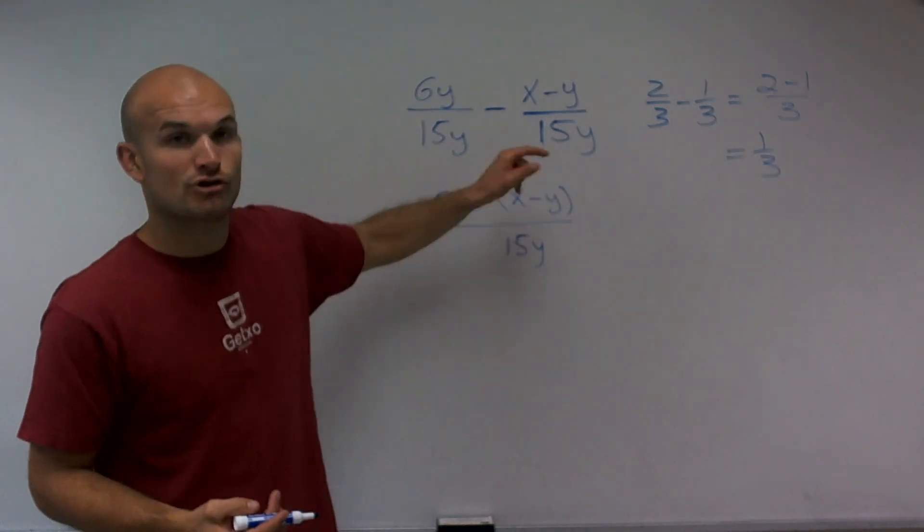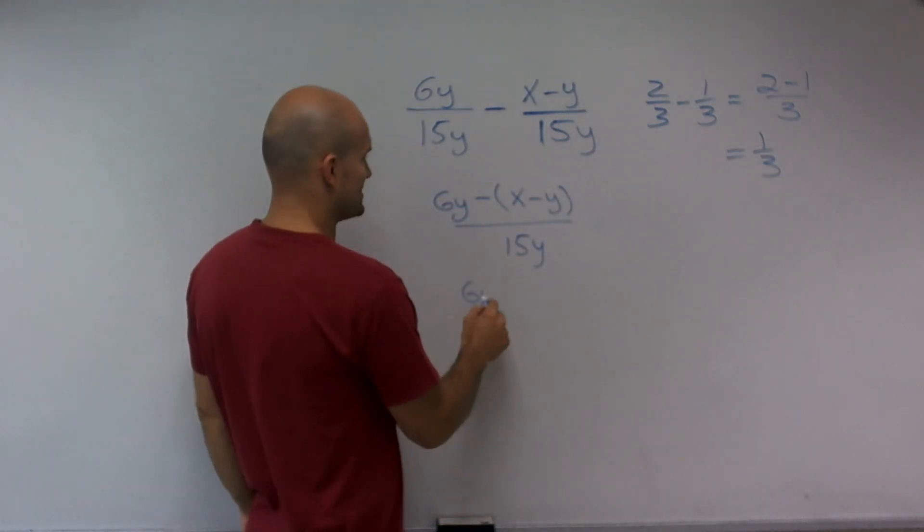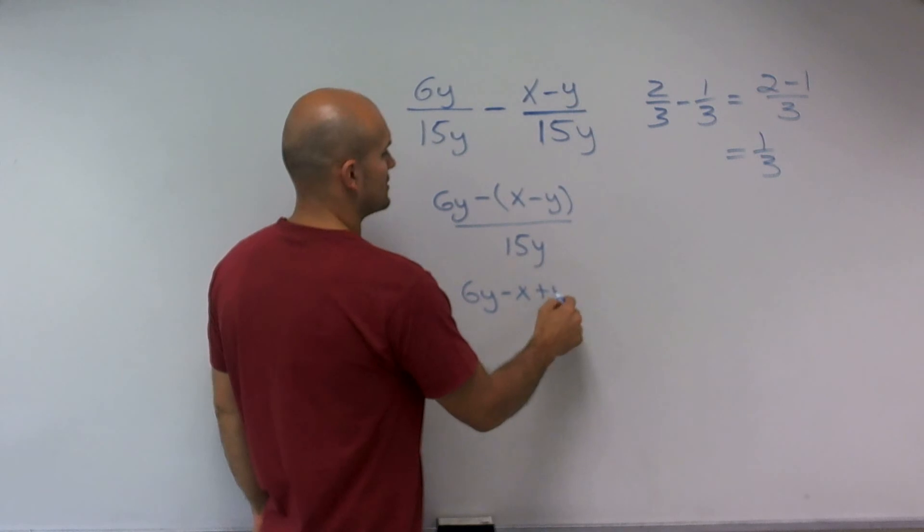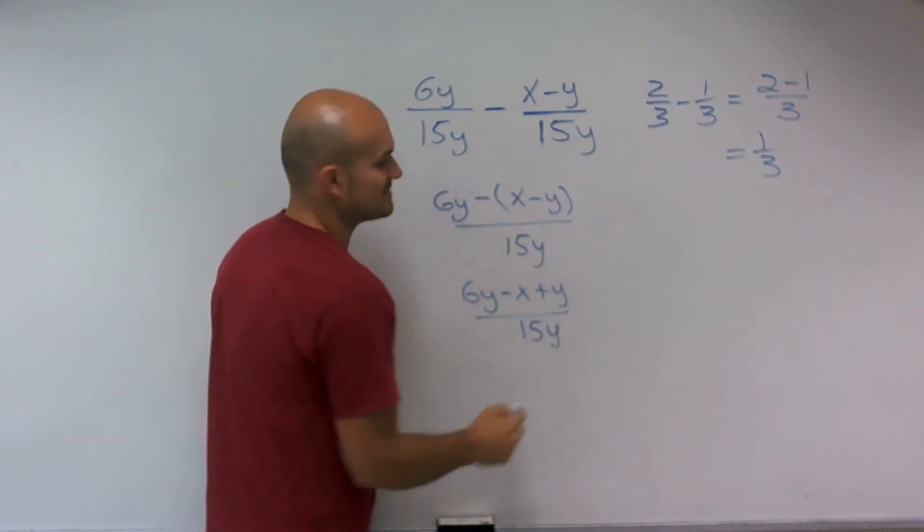So now what I'm going to do is I'm going to distribute this negative sign. So I have 6y minus x plus y over 15y.